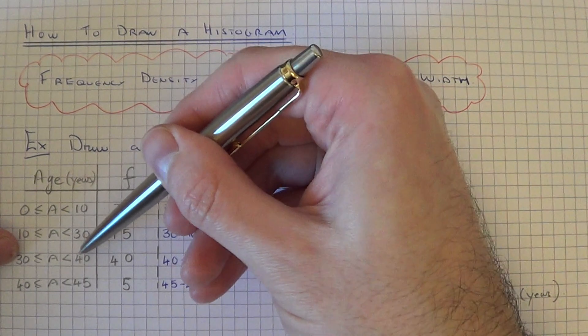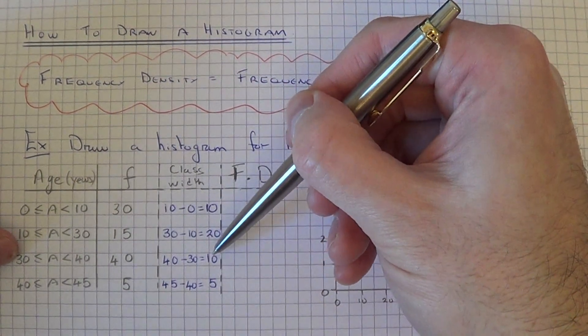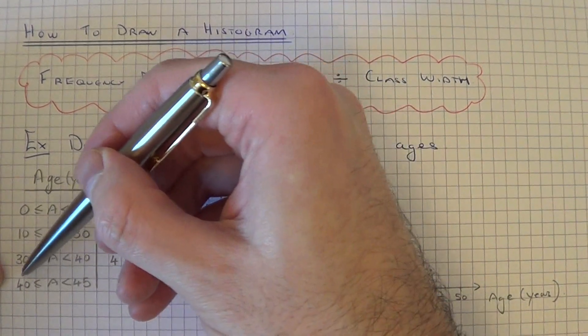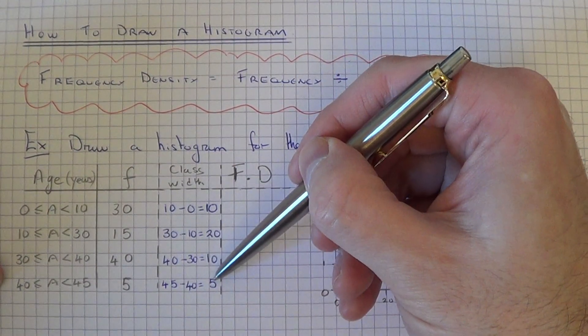For the third group, it will be 40 take away 30, which is 10. And for the final group, it will be 45 minus 40, which is 5.